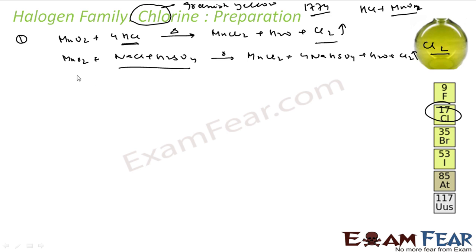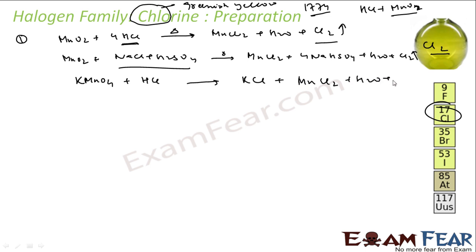You can also prepare chlorine by the action of hydrochloric acid on KMnO4. You take KMnO4 and hydrochloric acid, react them, and you get KCl, MnCl2, some water, and chlorine gas. You can write the balanced reaction. This is how you prepare chlorine in the lab.